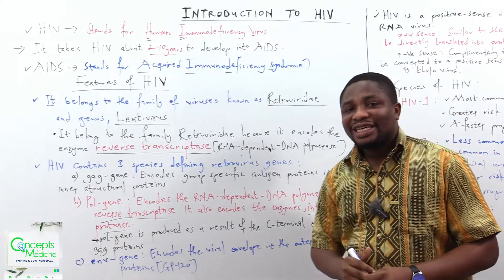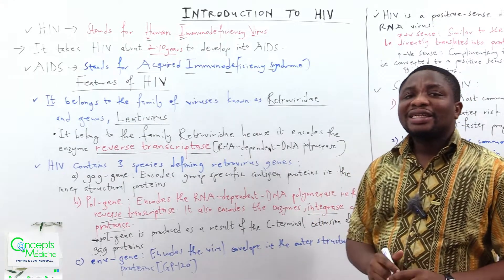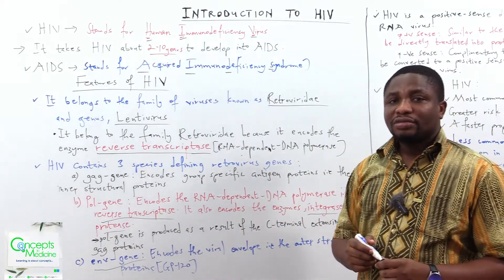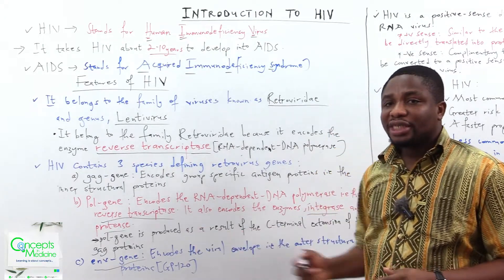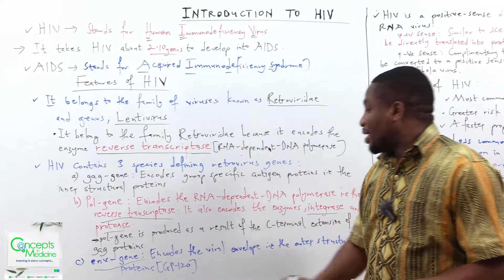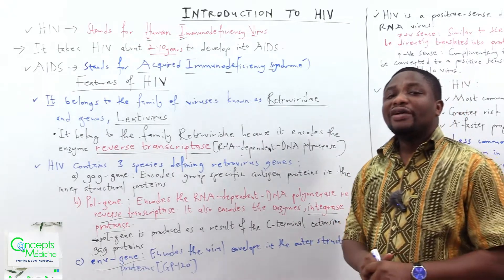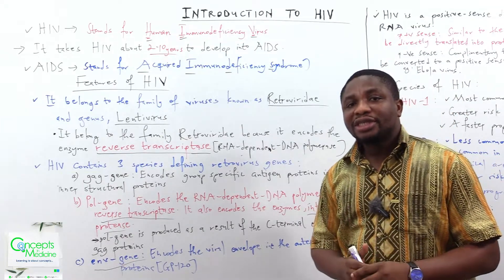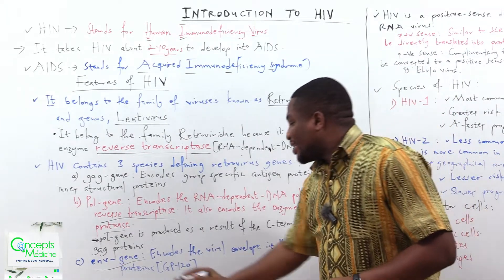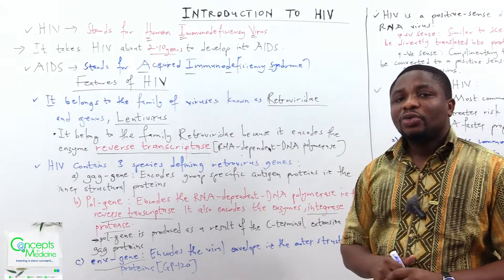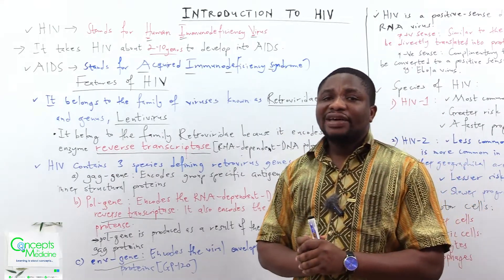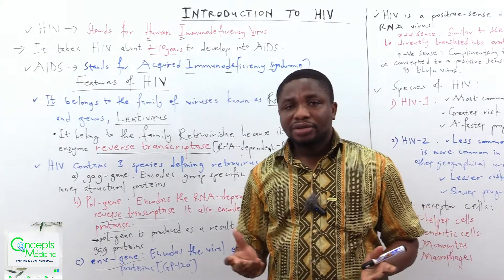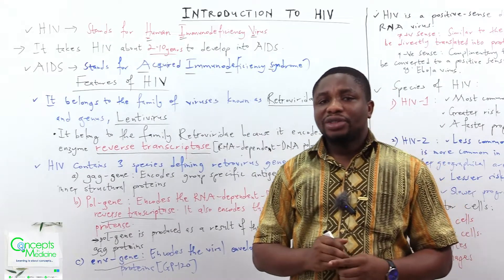The last gene is the ENV gene, where ENV stands for envelope — the envelope gene. What does it do? It encodes the viral envelope, and the viral envelope refers to the outer structural proteins. An example is glycoprotein 120 (gp120), which will help HIV enter into host cells when we talk about the pathophysiology.